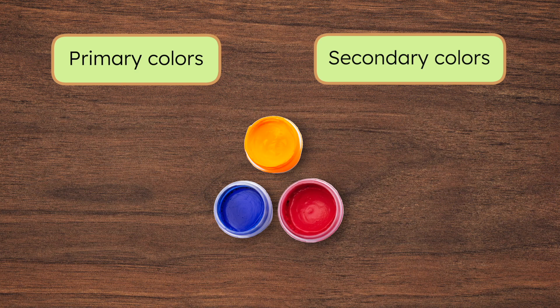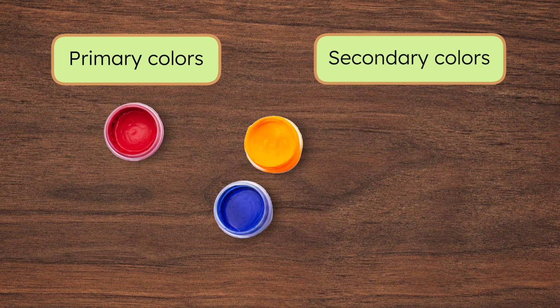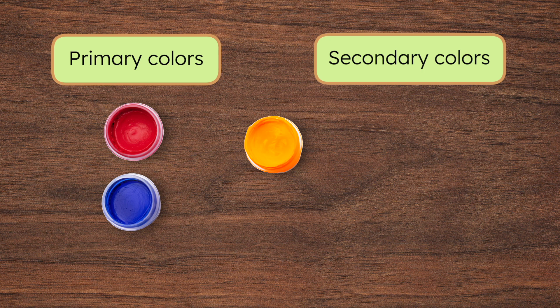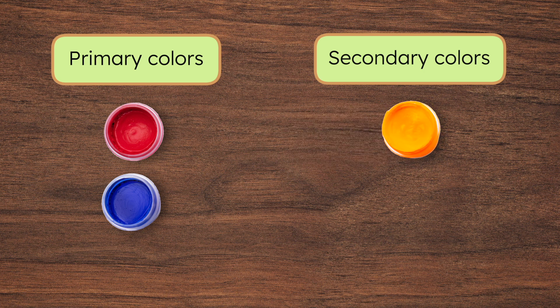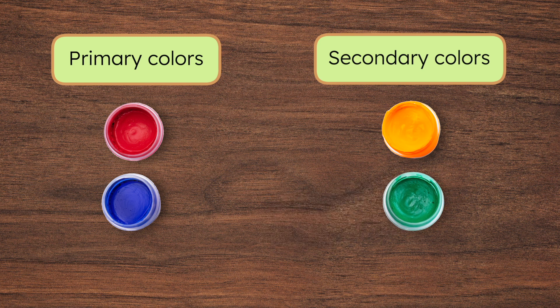Let's start with this one. Is red a primary color or a secondary color? That's right, it's a primary color. What about blue — primary or secondary? Yes, primary. It goes with red. And this one? Orange is a secondary color — let's put it over here. And green? Also a secondary color; it can go with orange. Now we have one place for primary colors and one place for secondary colors. You did an amazing job.